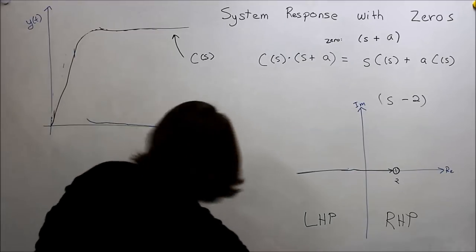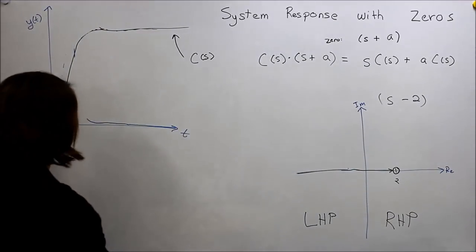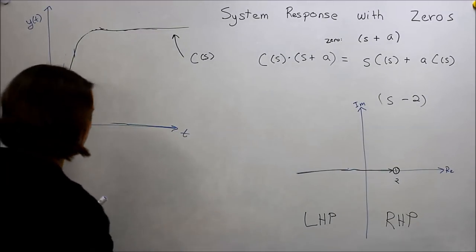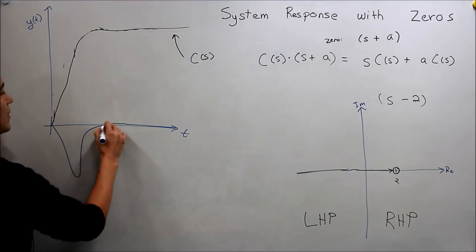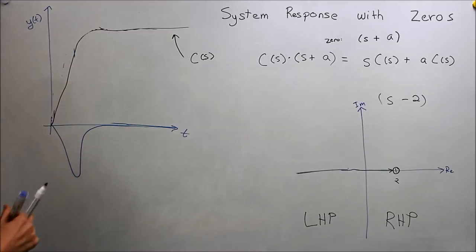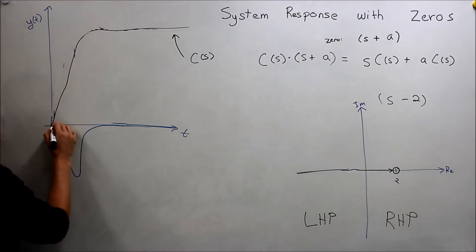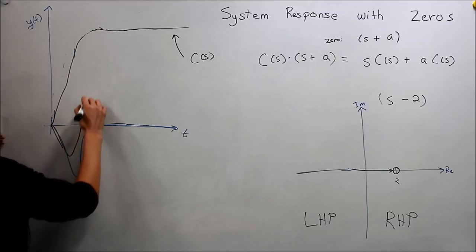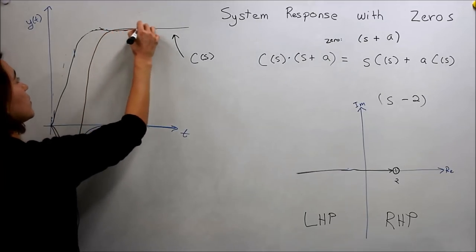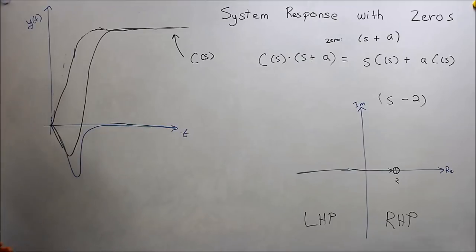So I'm going to try to erase this as much as possible to get a little bit clearer. Okay. And so now we have our zero affecting us in the negative, the opposing direction. So maybe something like that. But if we add those two signals together, we'll actually get a dip.